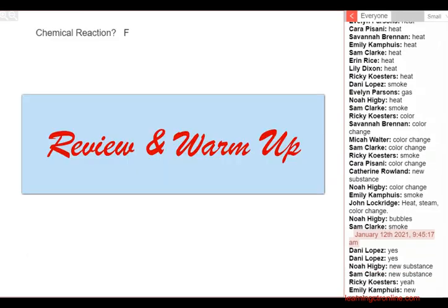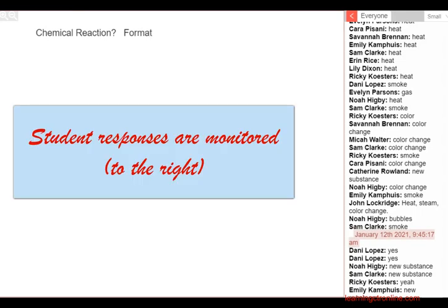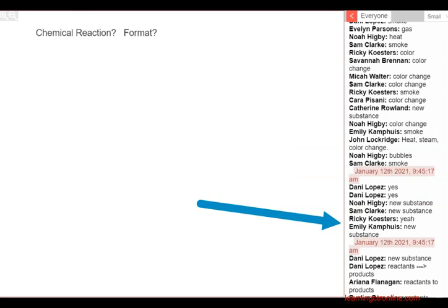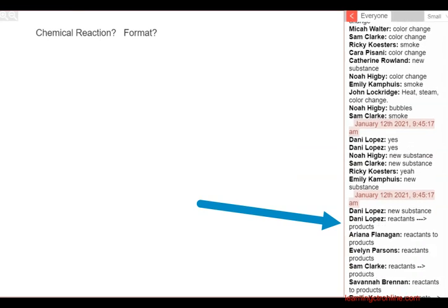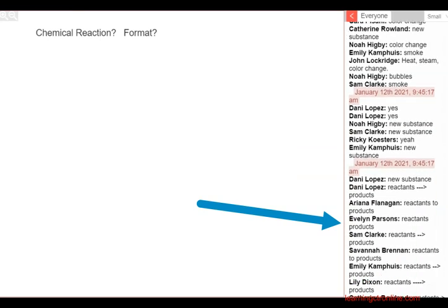What is the general format of a chemical reaction? What's involved? Very good! Danny and Sam have exactly what I'm looking for: reactants arrow products. Officially it should look like this because most reactions are going to be reversible, right? Very good.